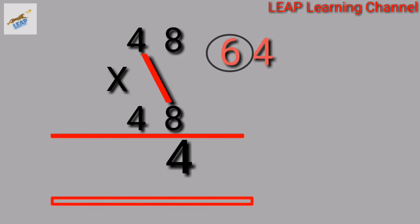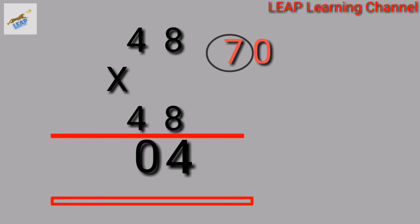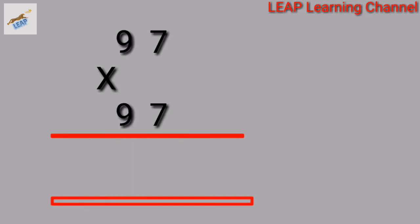Next number, 48. 48 into 48. 8 times 8 is 64. Carry over 6. Cross multiply: 8 times 4 is 32. 32 into 2 is 64. 64 plus 6 is 70. Write 0, carry over 7. 4 into 4 is 16. 16 plus 7 is 23. Square of 48 is 2,304.